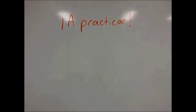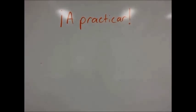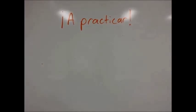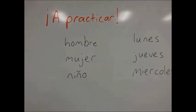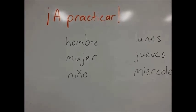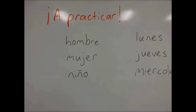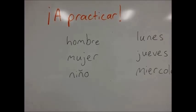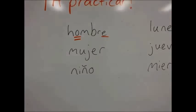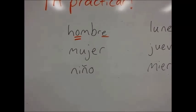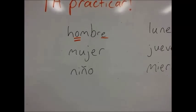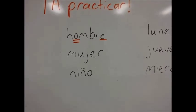Now we're going to practice. I'm going to write a word on the board, and I want you to underline the syllable that should naturally have the emphasis. If the natural emphasis doesn't match the actual pronunciation, write an accent. The first word is hombre. This word ends in a vowel, which means the emphasis naturally falls on the second to last syllable — hombre. No accent needed.